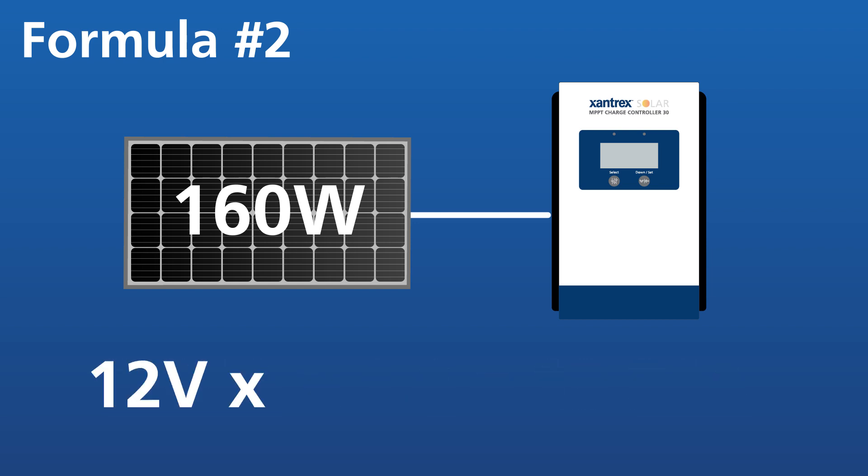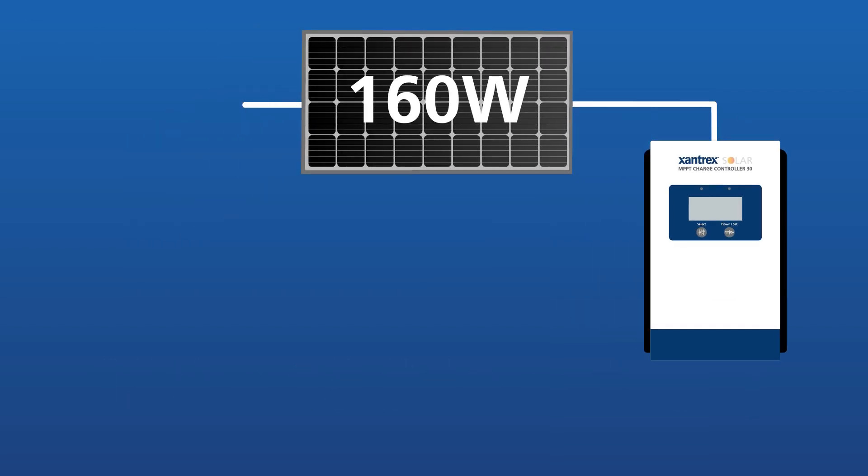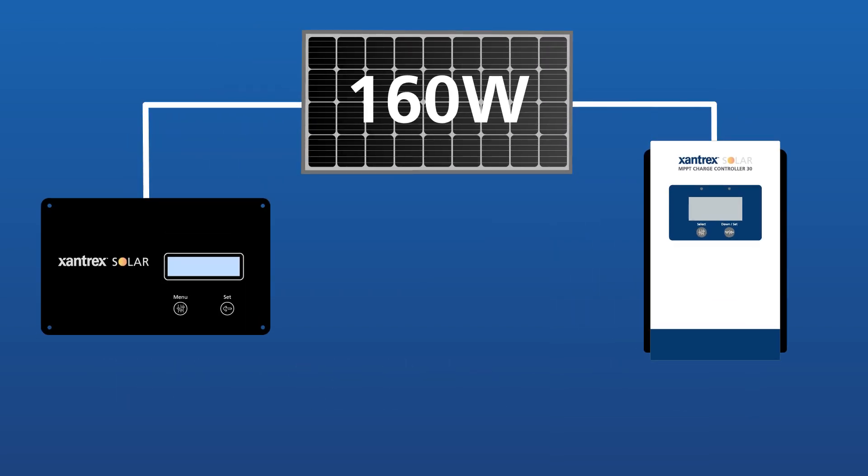12 volts multiplied by 13.34 amps equals 160 watts power output. Our 160-watt panel can produce maximum power output of 100 watts using a PWM versus 160 watts using an MPPT. This is a major difference.